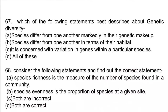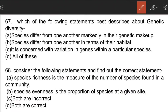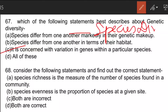The next question asks which statement best describes genetic diversity. Option C is the correct answer: genetic diversity is concerned with variation in genes within a particular species. The first option — 'species differ from one another markedly in their genetic makeup' — describes species diversity, not genetic diversity.